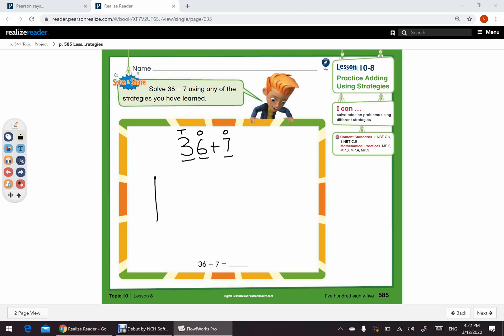So, we draw 3 10's and 6 1's. 1, 2, 3, 4, 5, and 6. And we have 7 1's. 1, 2, 3, 4, 5, 6, 7.